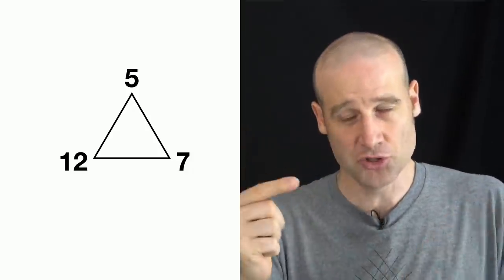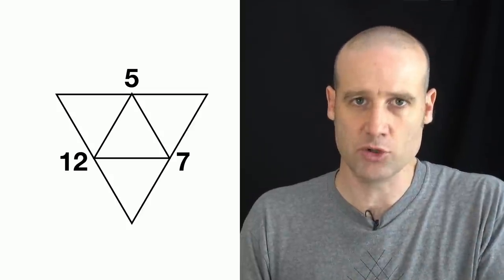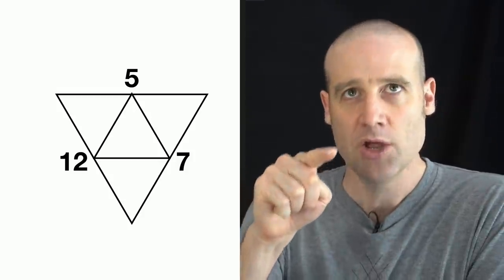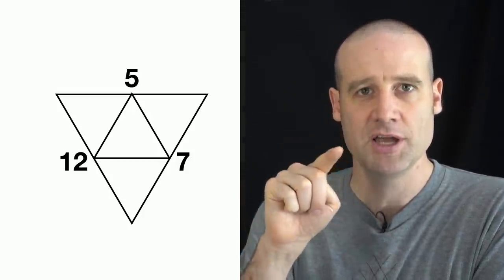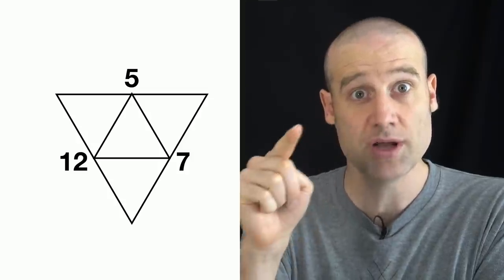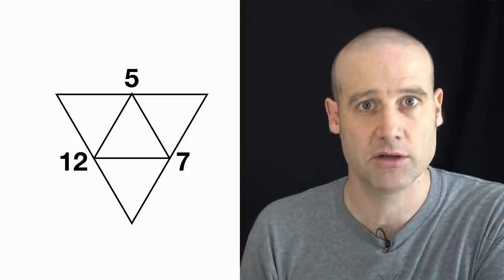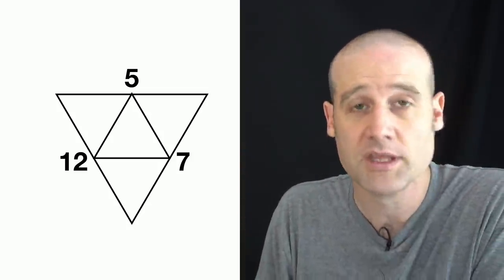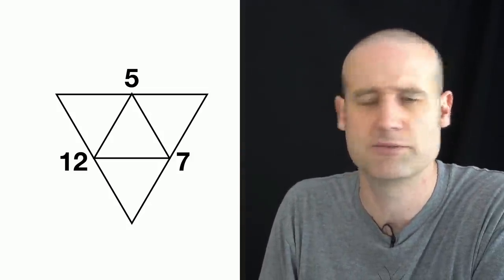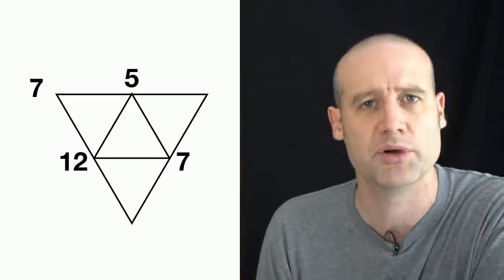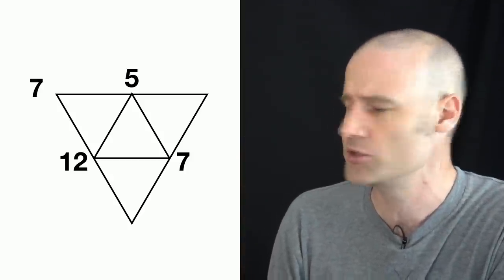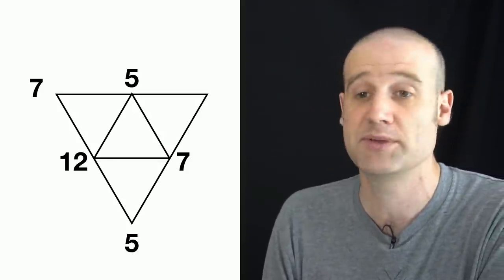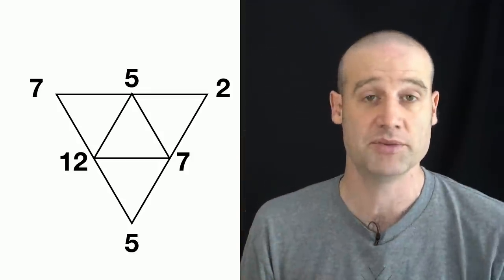So what you do is draw another similar triangle but upside down around the first triangle, and when we number this one we put in the numbers which are the difference between the two numbers on either side. So there's a 5 and a 12 — the difference between 5 and 12 is 7, so we put a 7 on that point. Carry on around: the difference between 12 and 7 is 5. And the last point: the difference between 5 and 7 is 2.